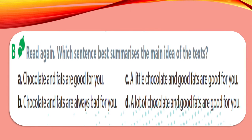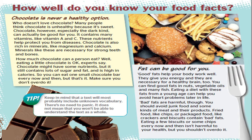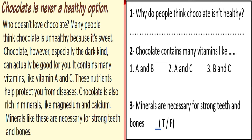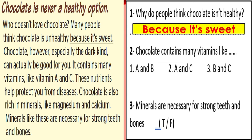Move to the next part — read again and find the sentence that best summarizes the main idea of the text. Pause the video now and try to choose the correct answer. Now let's read to find out. 'Chocolate is never a healthy option' — why do people think chocolate is unhealthy? Because it's sweet. Now move to number two — chocolate contains many vitamins. Chocolate has got excellent Vitamin A and C, which is necessary for strong teeth and bones. Is that true or false? This one is true.